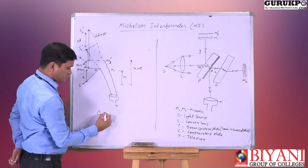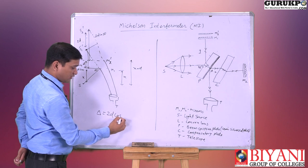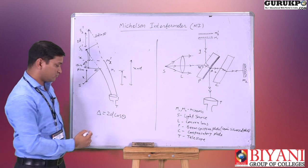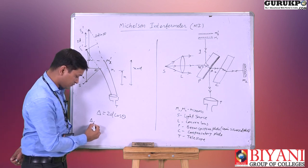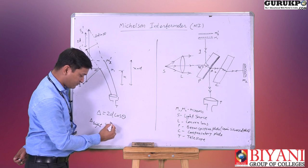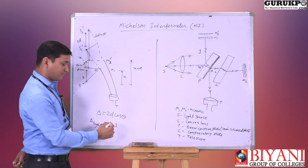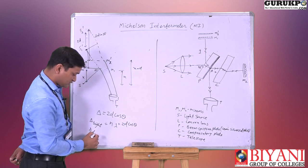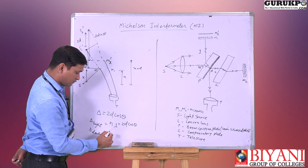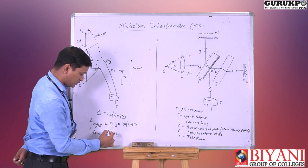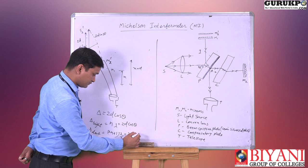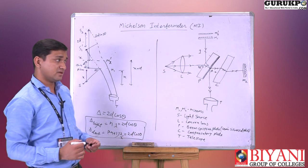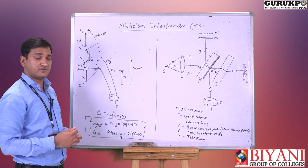So the path difference in the Michelson interferometer is equal to 2d cos theta. For the bright fringe condition, the path difference is equal to n lambda, so 2d cos theta equals n lambda. For the dark fringe condition, the path difference equals (2n + 1) times lambda by 2. These are the conditions for bright and dark fringes in the Michelson interferometer.